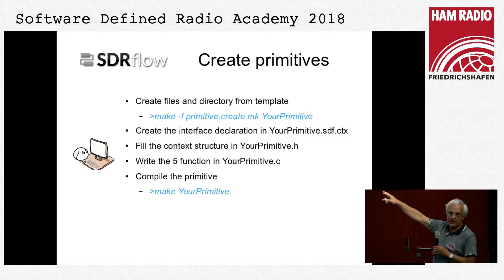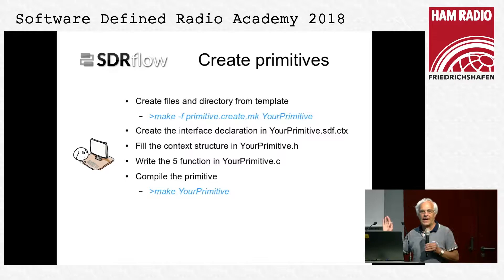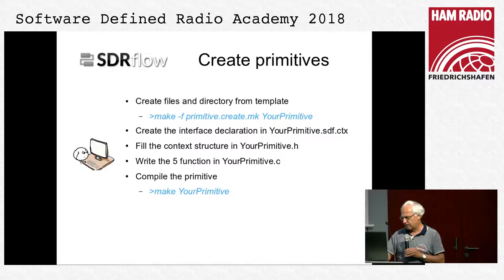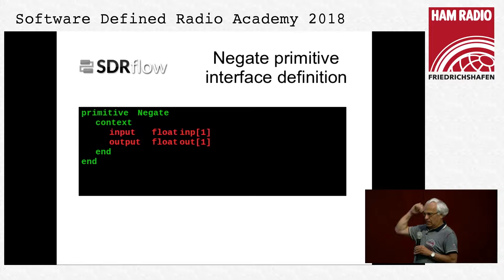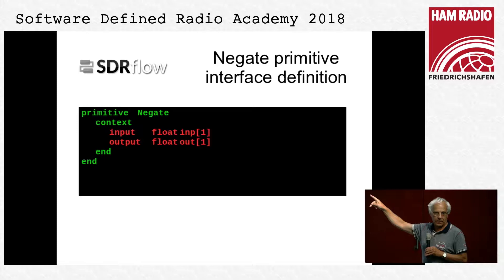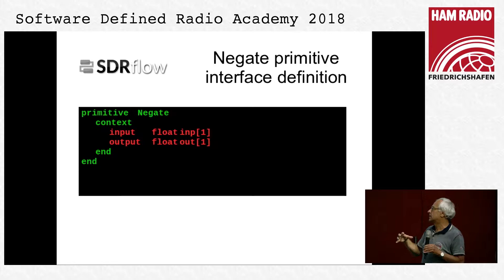You don't have to write make files or anything else — the build system will automatically pick up any new primitive in the system. Here is the interface declaration file: what is shown in green is generated by the system, and what is in red is what you have to fill in. You have to fill in the ports of your components. This is a very simple primitive which has an input port and an output port — it takes a float number from the input port, negates it, and puts the result into the output port.